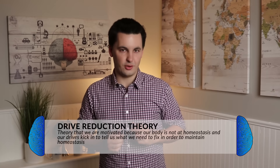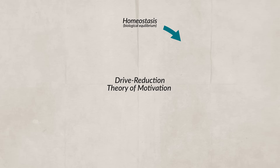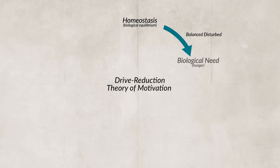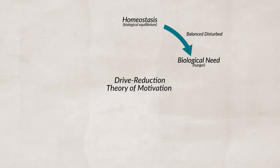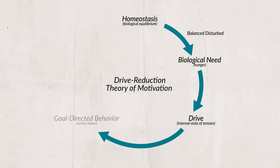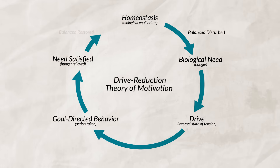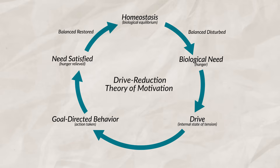Another theory is the drive reduction theory, which believes that we are always trying to keep our bodies in homeostasis — the ability of the body to maintain internal stability. For example, if you're in a hot room, you'll start to overheat and become motivated to cool down. Here, your motivation is focused on your primary needs. Something occurs in life that takes your body out of homeostasis, like being thirsty or hungry, causing a drive — a state of tension or imbalance. These drives are satisfied by eating or drinking, which reduces the imbalance and returns your body to homeostasis, reducing your drive and motivation.